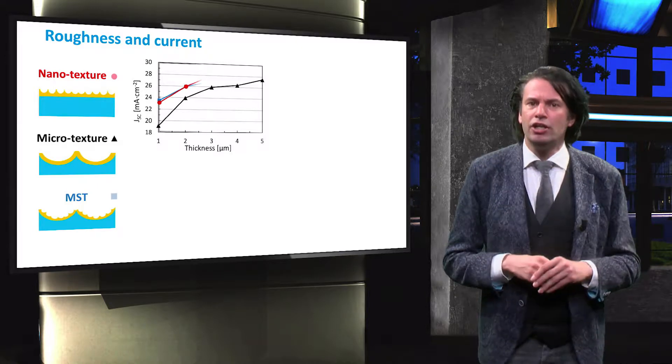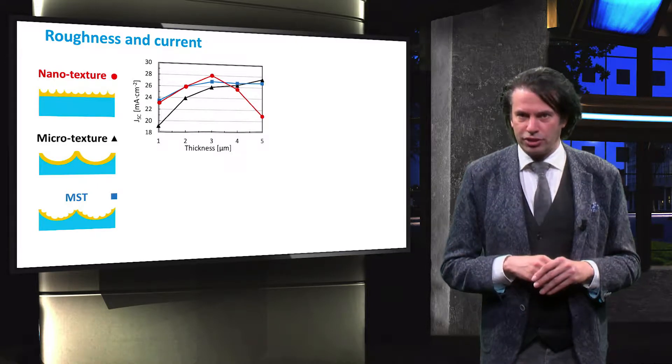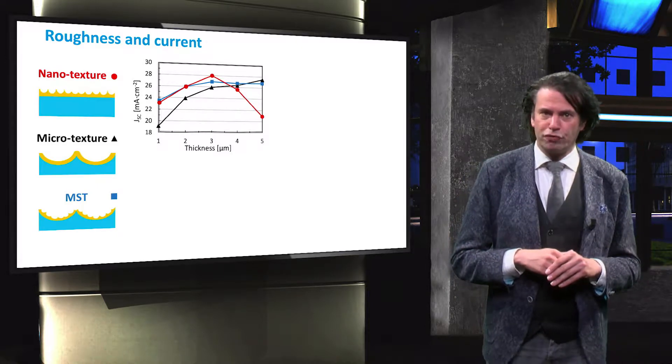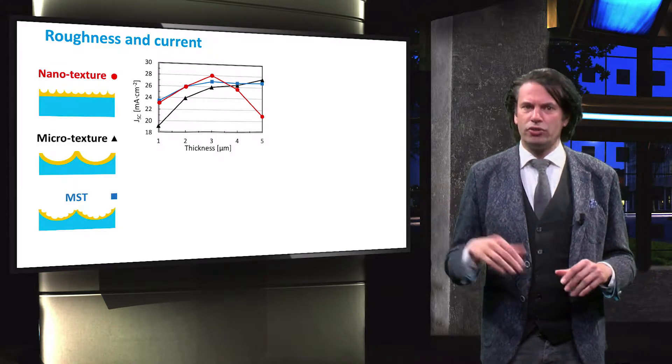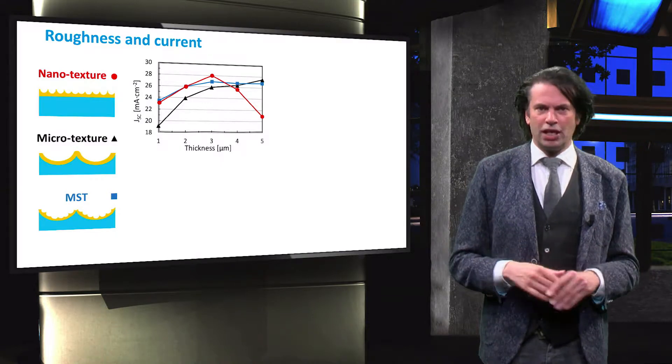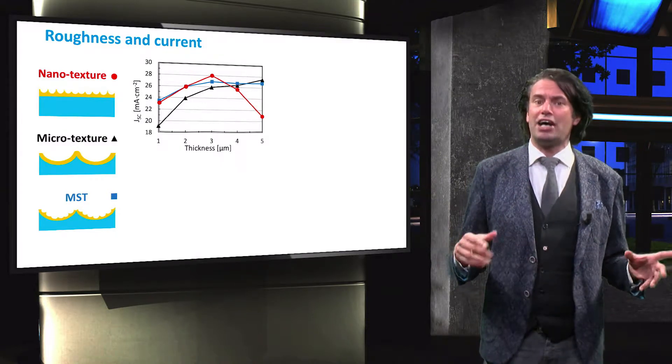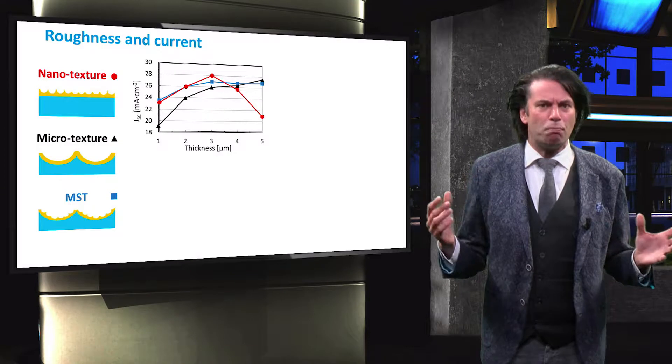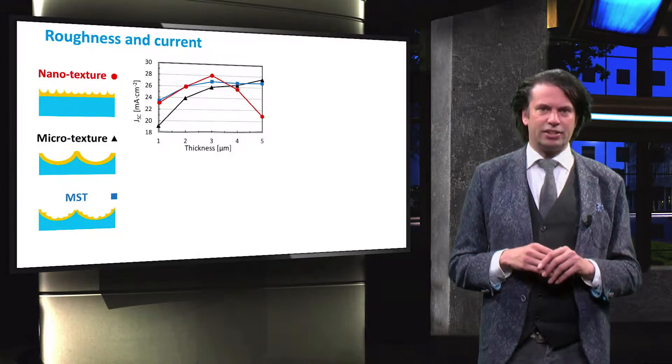The short-circuit current density of the nanotextured cell and the cell with modulated surface texture, indicated by the red dots and blue squares respectively, is much higher for thin film absorber layers. We can therefore gather that the nanotextured surfaces are much more effective at scattering the incident light.